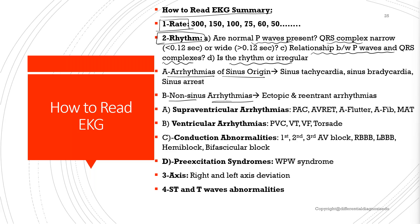We also have to see if the rhythm is supraventricular or ventricular arrhythmia. Examples of supraventricular arrhythmia include PACs, AV nodal reentrant tachycardia, atrial flutter, atrial fibrillation, and multifocal atrial tachycardia. Examples of arrhythmia of ventricular origin include PVCs (premature ventricular contractions), V-tach, V-fib, and torsades de pointes.